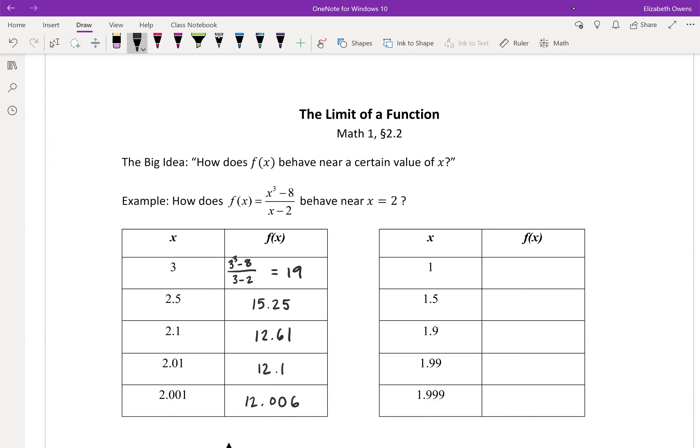And then 2.001, plugging that in we get 12.006 is what I have. Okay, so you might wonder, okay, like why did we choose these particular x values? And that goes back to what we're looking at in this original question. We're trying to see how this function is going to behave near x equals 2.